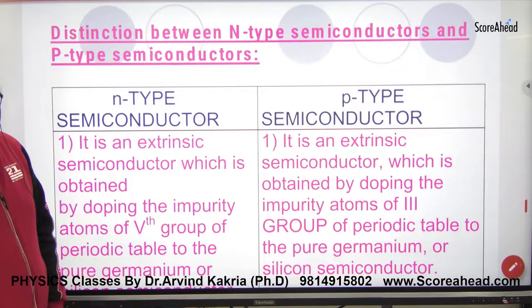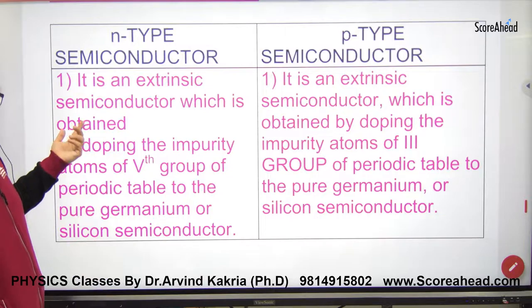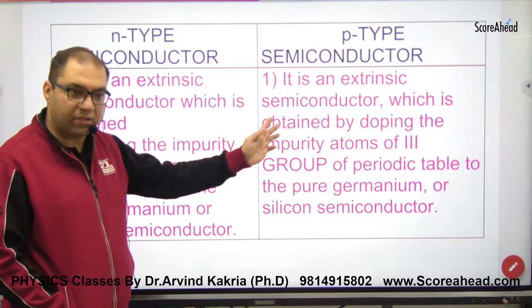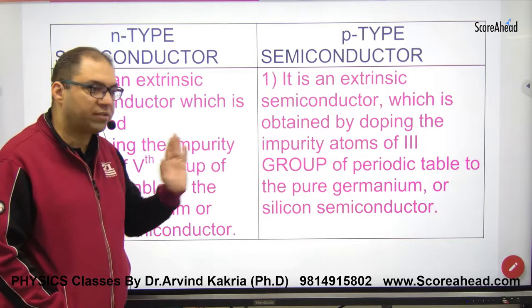Distinction between n-type and p-type semiconductors. Both are extrinsic. N-type is doped with fifth group elements, p-type is doped with third group elements.